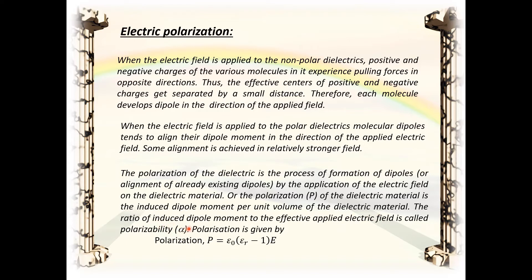The ratio of induced dipole moment to the effective applied electric field is called polarizability, alpha. Polarization is given by P equal to epsilon_0 into (epsilon_r minus 1) into E, where E is the applied electric field, epsilon_r is the dielectric constant, and epsilon_0 is the permittivity of free space.